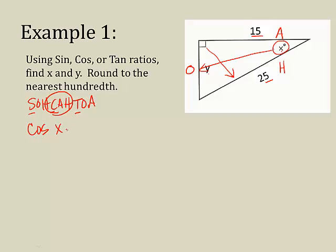I say, cosine of x equals the adjacent over the hypotenuse. So, in order to find x, what I need to do is multiply by the inverse cosine.